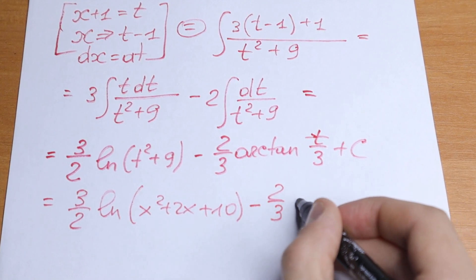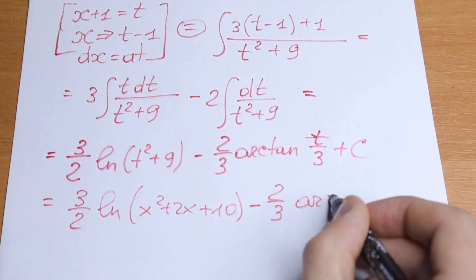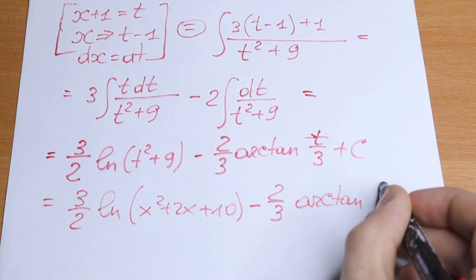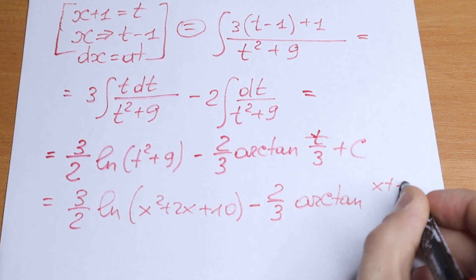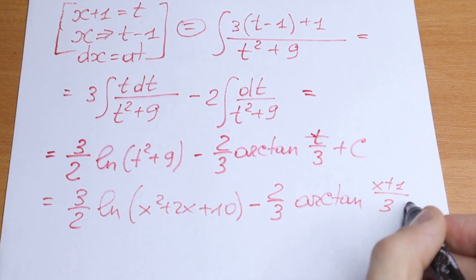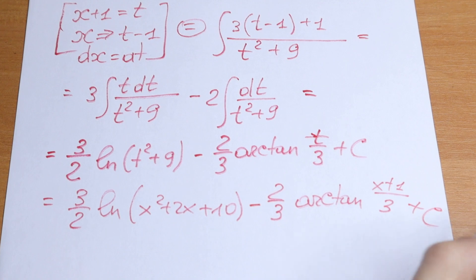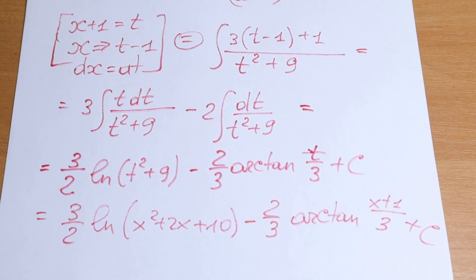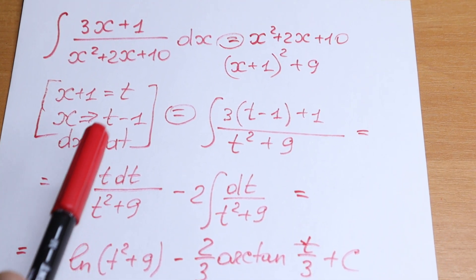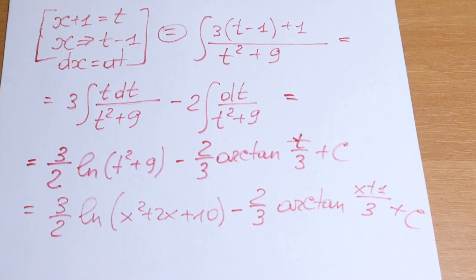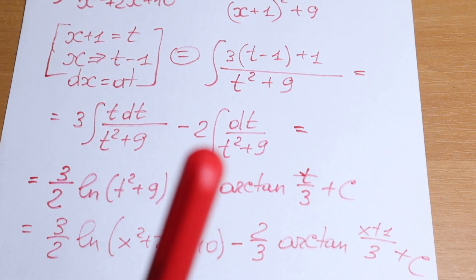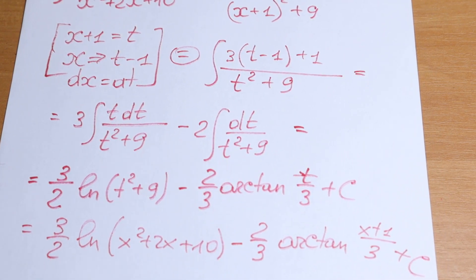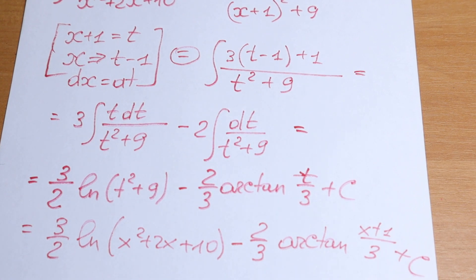Now if we substitute x plus 1 back in for t, our final answer is: 3/2 times the natural log of (x squared plus 2x plus 10), minus 2/3 times arctangent of (x+1)/3, plus C. This is our substitution and this is our answer. If you still have any questions, write them in the comments. Thank you so much for watching, and see you in the next video!